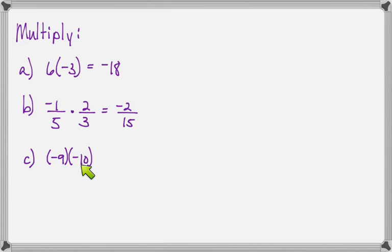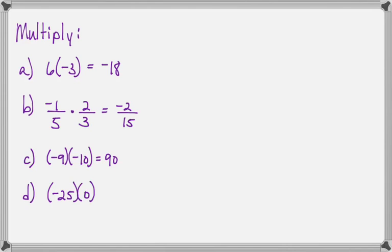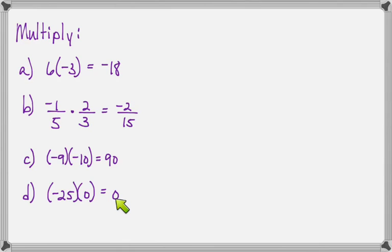Negative nine times negative ten: here we have two numbers with the same sign, so they make positive 90. And negative 25 times zero: even though this is a negative, anything you multiply by zero gives you zero. Putting a negative sign in front of zero doesn't have any meaning, so just let that be zero.